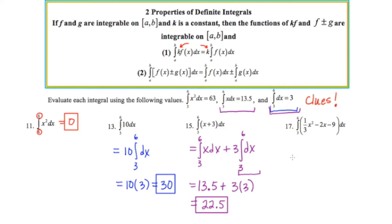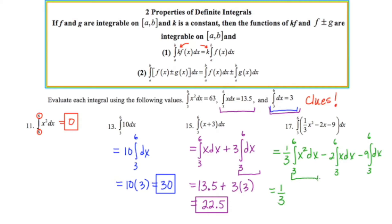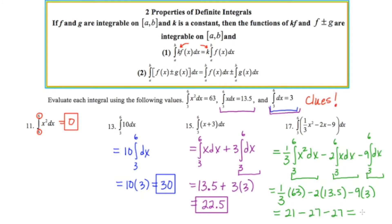Again we have the definite integral of a multi-term expression. Each term is preceded by a constant, so when I split this up into three separate definite integrals, I write the constant out in front. Looking at the clues and substituting in known values: one third of 63, minus 2 times 13.5, minus 9 times 3. Cleaning this up gives 21 minus 27 minus 27, which is negative 33.